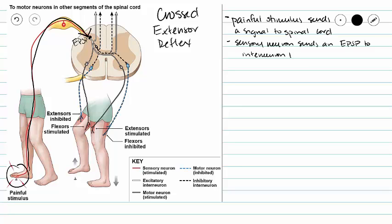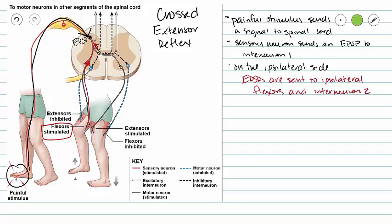Now let's just look at our ipsilateral side. On the ipsilateral side, we are going to send an EPSP to our motor neurons of our flexors and an EPSP to interneuron 2. Interneuron 2 is going to send an IPSP to our ipsilateral extensors.